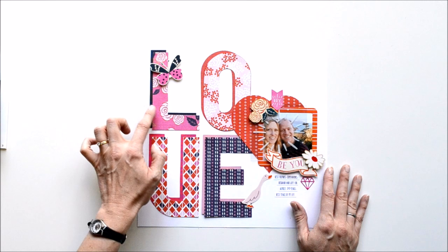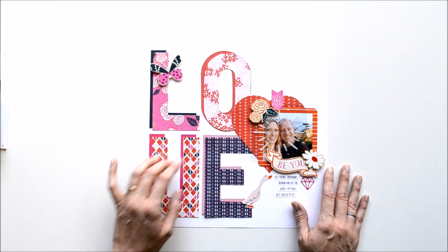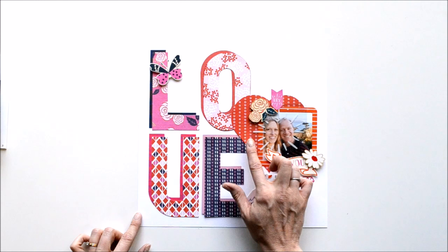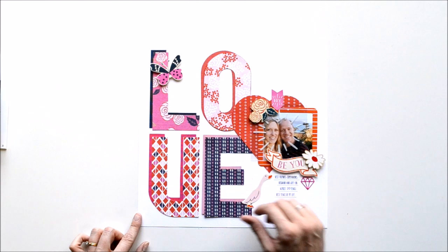I really wanted to have fun with the big title on this page, so I used the Alphabet Punchboard and punched two sets of each letter - one that's sort of like a background or shadow and then one with some pretty patterned paper. Then I actually punched this large heart accent here with the Alphabet Punchboard and I will show you how to do that.